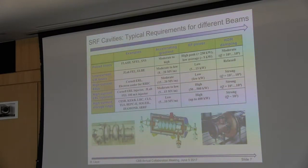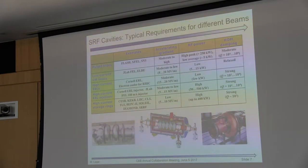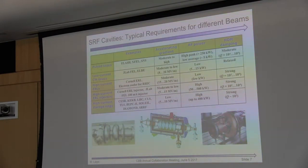How these cavities look is very different depending on the type of machine: pulsed linacs where fields are only on for short periods, continuous linacs with low current, high-current machines like ERL injectors, and storage rings — all have different requirements in terms of accelerating field, the power needed to be transported to the beam, and what we call higher-order mode damping. When the beam goes through the cavity it drives all these higher-frequency modes; there are an infinite number in these cavities, and we need to suppress them. How strongly we have to suppress them depends on the kind of machine.